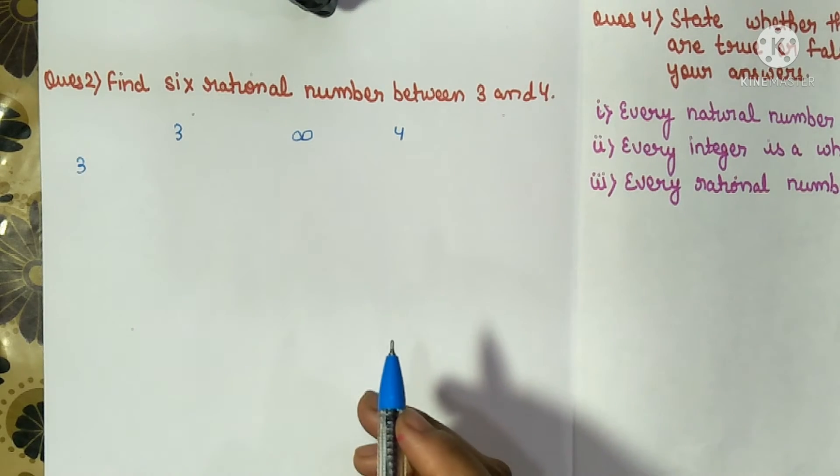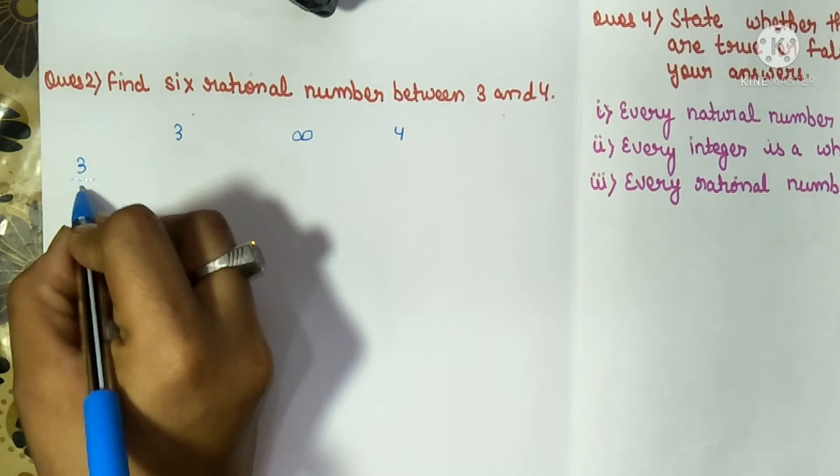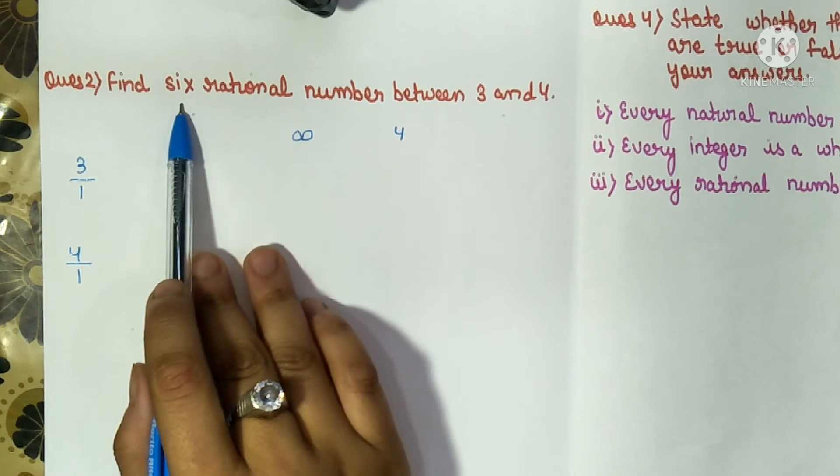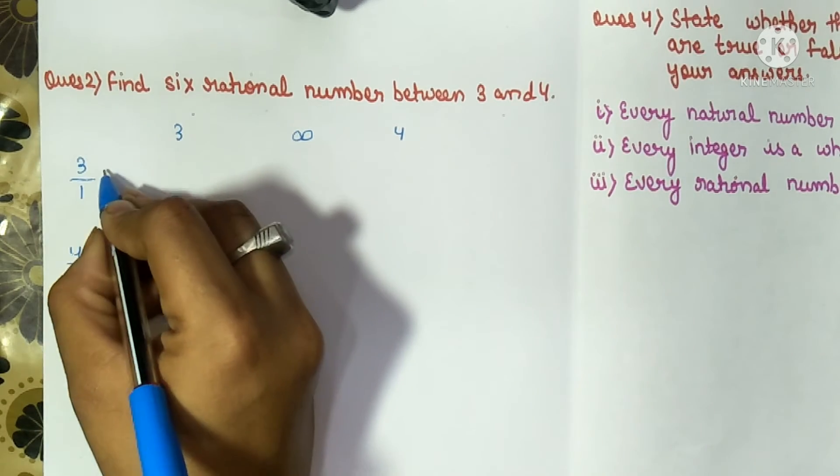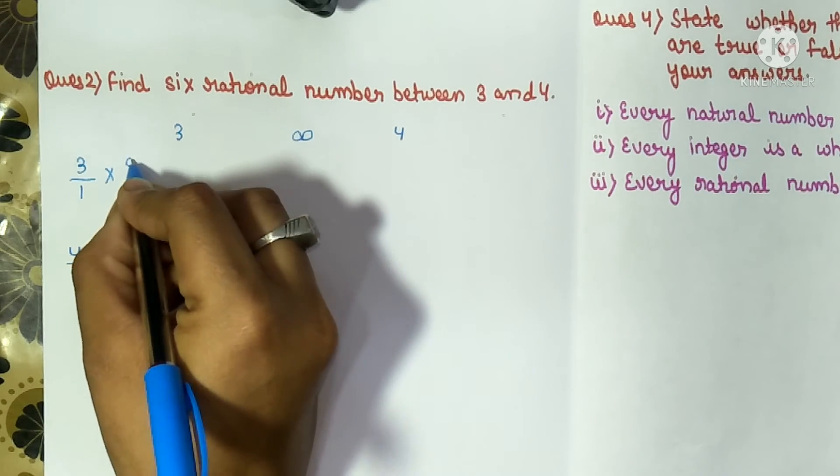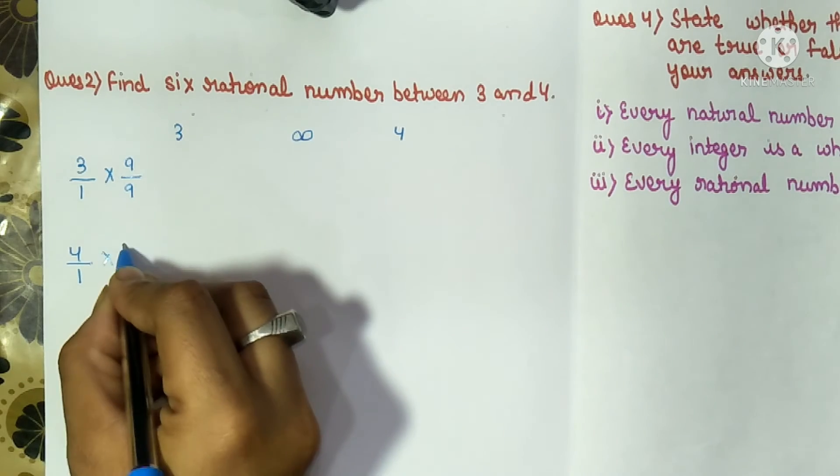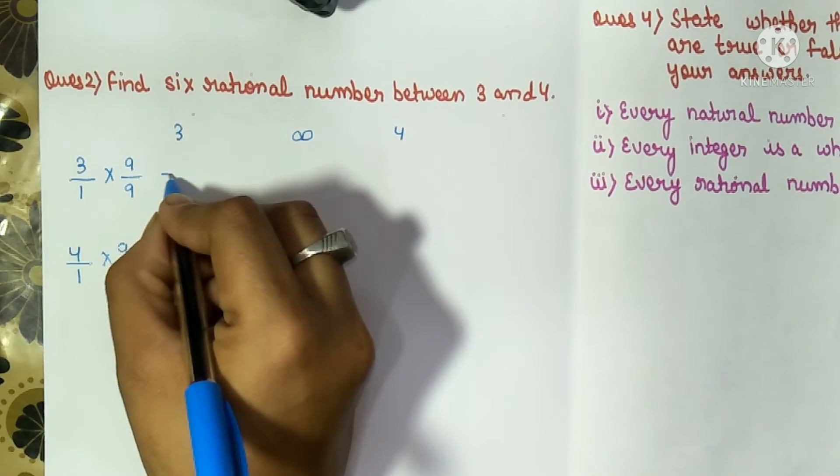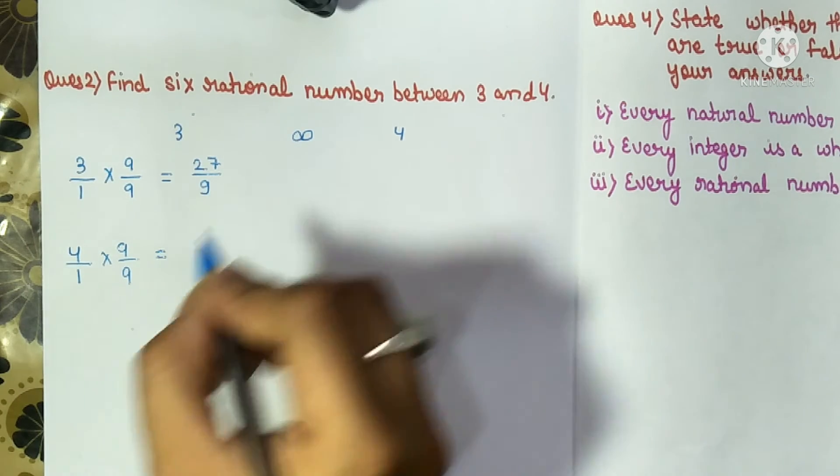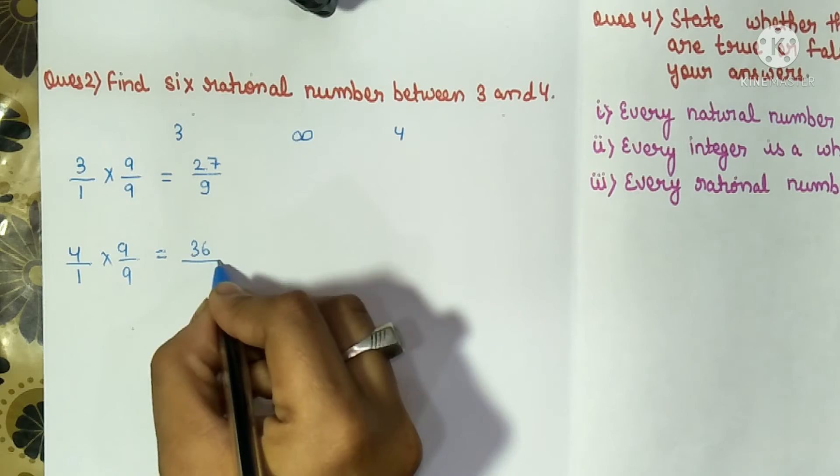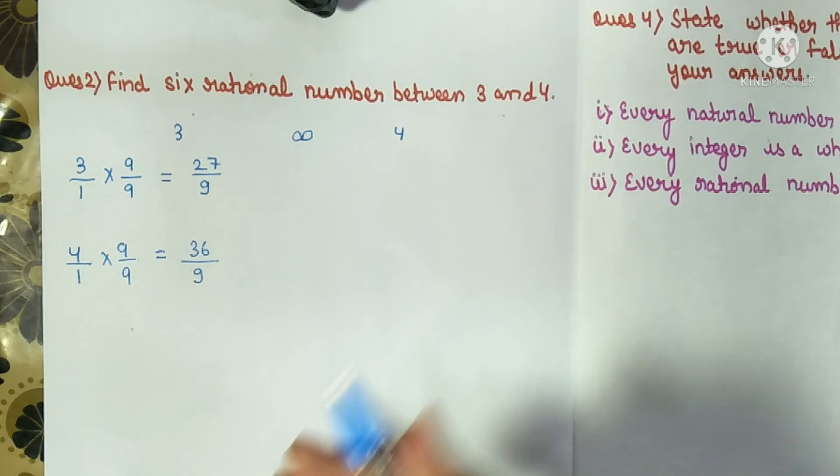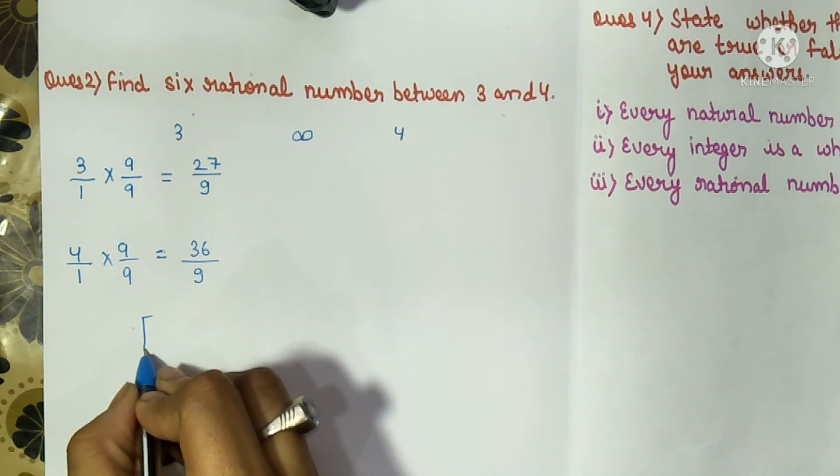The basic method to find the rational numbers between two numbers is: we write it in the form p by q. Then, since we need to find six numbers, we multiply both by any number greater than six—like seven, eight, nine, or ten. Here we multiplied by nine. So three times nine is twenty-seven by nine, and nine times four is thirty-six by nine. Now we have made the denominators same—twenty-seven by nine and thirty-six by nine. Between these we can take any numbers.